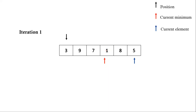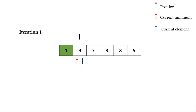Next, we swap the value pointed by current minimum and the value pointed by the position pointer. After this swapping, element 1 is at its right position. Now we repeat the same process. The position pointer moves to the second position. Current minimum and current element both point to 9. The current active array is now from 9 to 5.